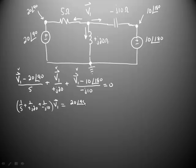plus the minus 10 at 180 divided by minus J10 comes to the right hand side and turns positive as well, 10 at angle 180 divided by minus J10.